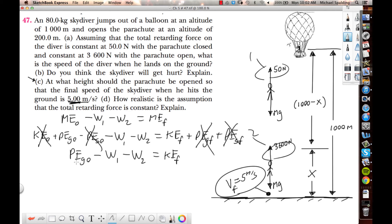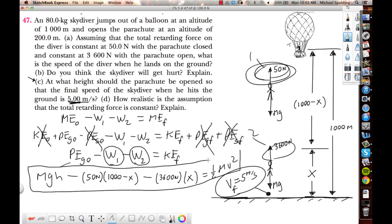What's the equation for potential of gravity? M, G, H. What can we say about work one? The work done by this force here. It's going to be 50 newtons times what? A thousand minus x. Force times displacement. Minus. Now, what can we say about work two? 3,600 times x. And then this is going to equal one half mv squared. What's the only thing missing in this equation? X. The only thing that you don't have is x. And you know what, guys? You can do this algebra.